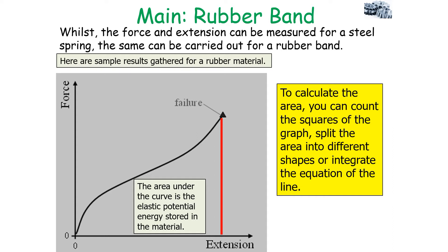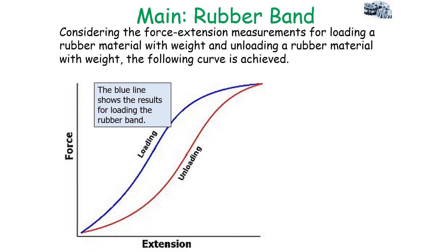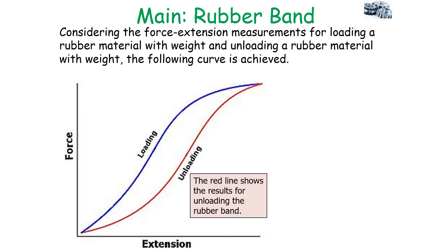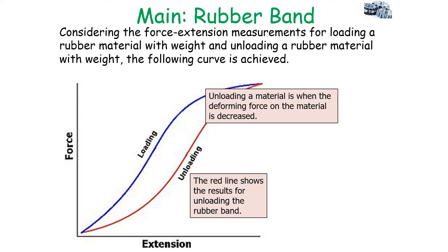When you consider the force extension measurements for loading and unloading a rubber band with weight, you achieve the following curve. The blue line shows the results for loading the rubber band — loading is when the deformant force on the material is ever so slightly increased continually, i.e. you add weights onto the material. The red line shows the results for unloading the rubber band — unloading is when the deformant force on the material is decreased, removing those weights.